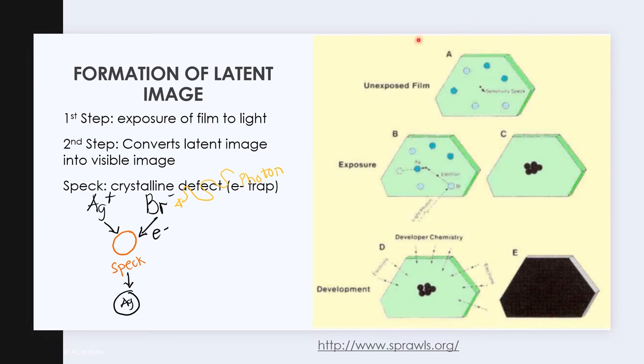This speck attracts positive silver ions and it will be neutralized, thus converting it into black metallic silver.